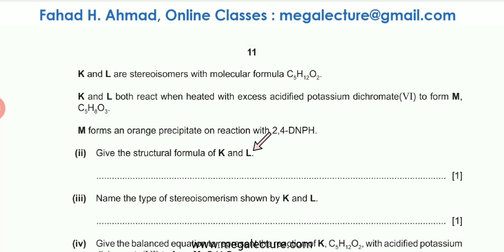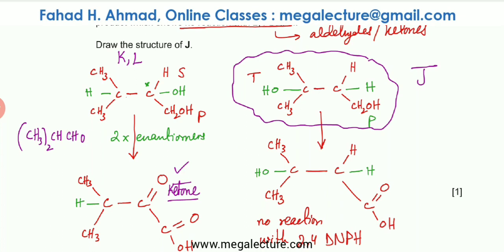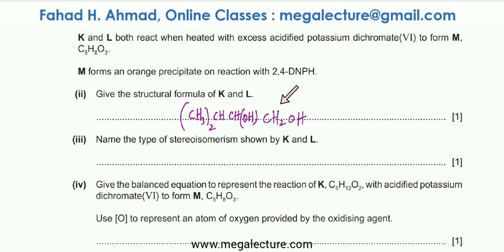The structural formula of K and L: there is a C with H and two CH3 branches, then CHOH, then CH2OH — written as (CH3)2CHCHOHCH2OH. The type of stereoisomerism shown by K and L is optical isomerism, as they are non-superimposable mirror images of each other.